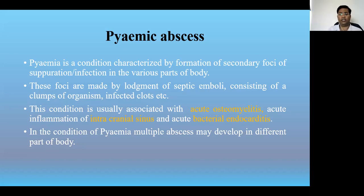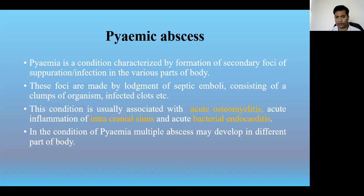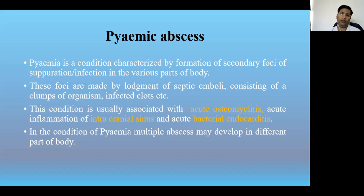Pyemic abscesses are usually associated with acute osteomyelitis, acute inflammation of intracranial sinuses, or acute bacterial endocarditis — places where infection arrives via blood clots traveling from a primary focus. Pyemic abscesses are generally multiple in number because the infection travels and can occur in multiple parts of the body.